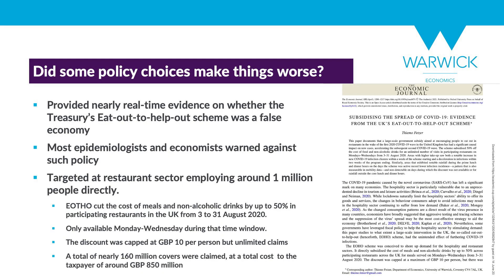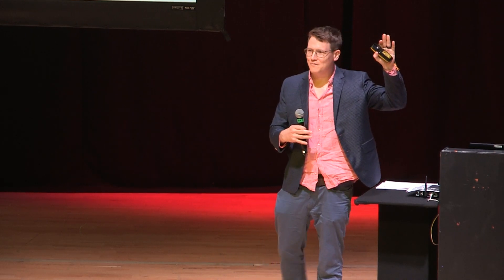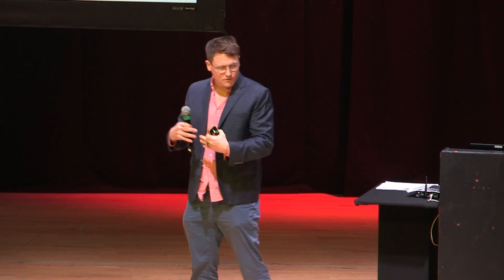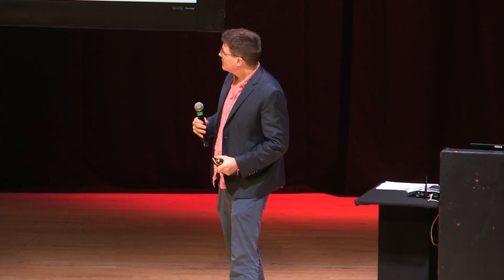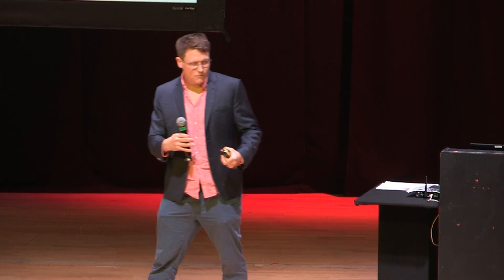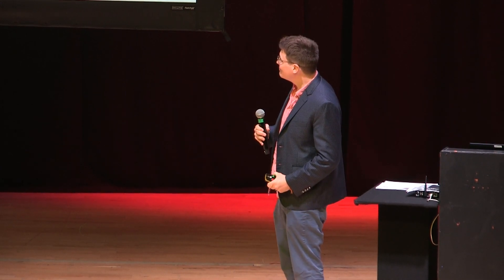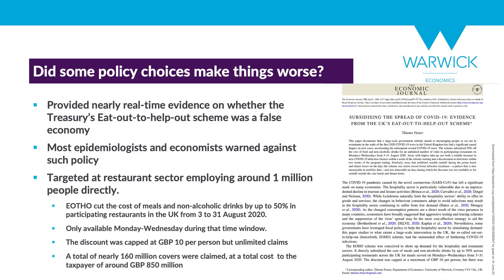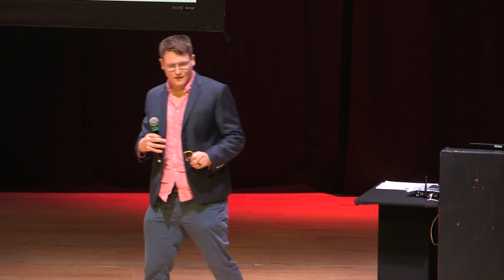Let me think about one policy that might have made things worse — the Eat Out to Help Out scheme. Can I get a hands up who participated or benefited from that scheme? A lot of people participated. The scheme implied a 50% discount on eat-out bills from August 3rd to August 31st 2020, available only Mondays, Tuesdays, and Wednesdays — the idea being you subsidize eating out on the days when restaurants are usually less busy. In total, about 160 million meals were covered, broadly taken up by many people.